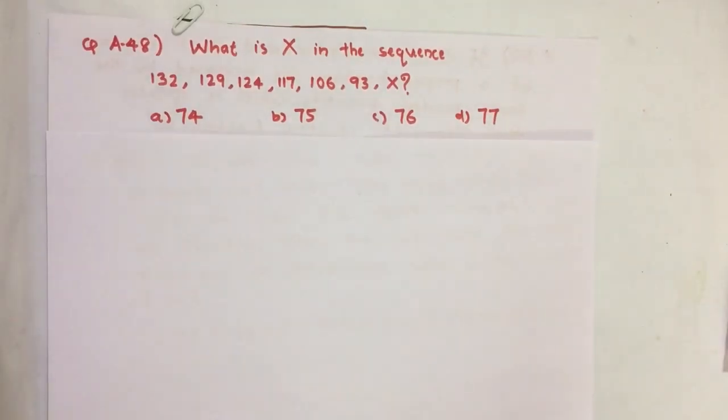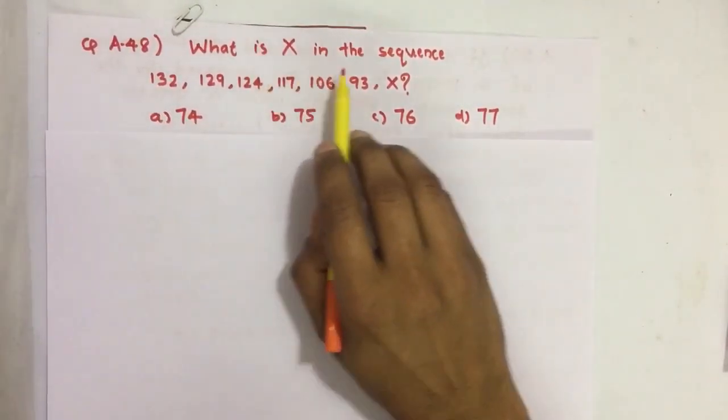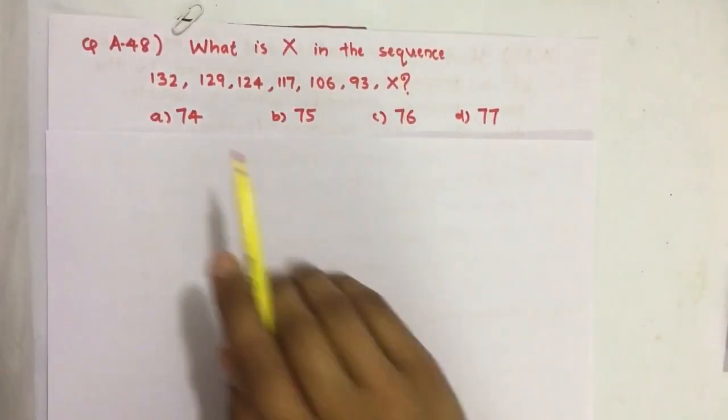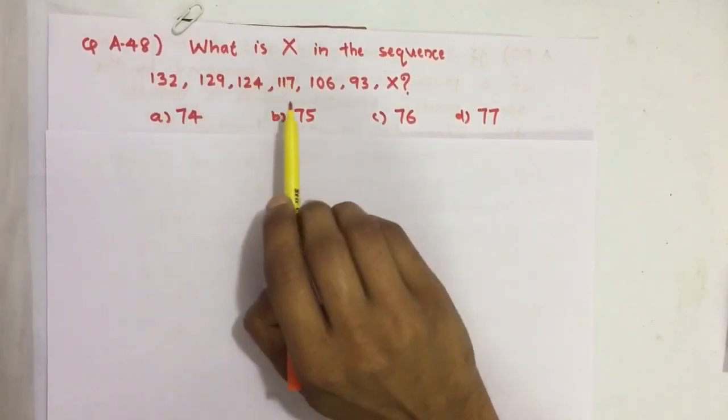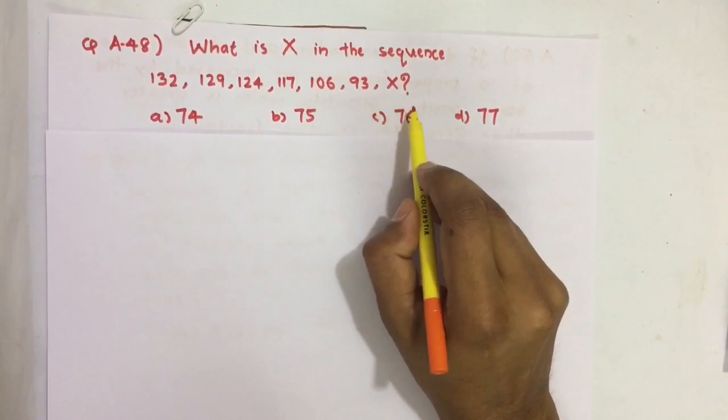Hello everyone, here I am going to solve 2019 CSAT question number 48 from question paper series A. What is X in the sequence? Here we have a sequence: 132, 129, 124, 117, 106, 93, and finally X. So we have to find this X.